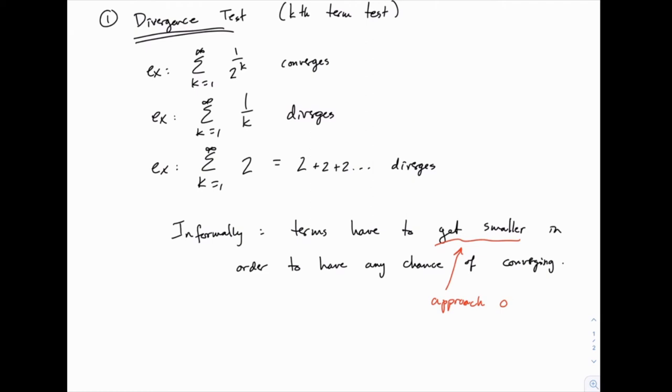So the divergence test can never conclude that a series converges. All it can do is filter out some series that will diverge. So it can catch really obviously diverging ones, but everything that passes the divergence test could diverge or converge. We don't know. We just know that some things might fail this test. So it's an easy filter to apply at the beginning of the process to just catch series that fairly clearly diverge.